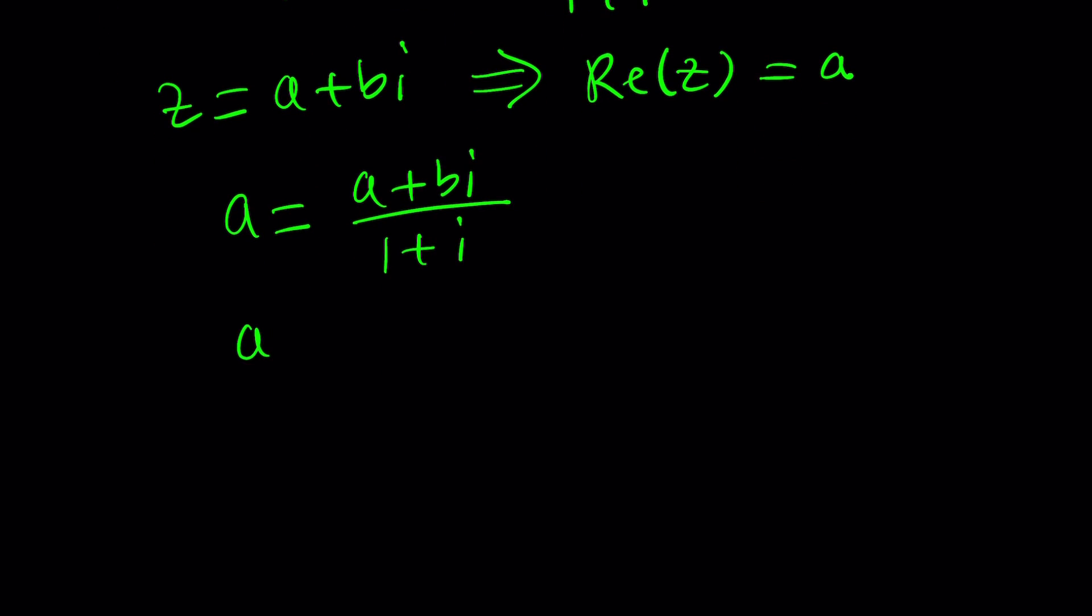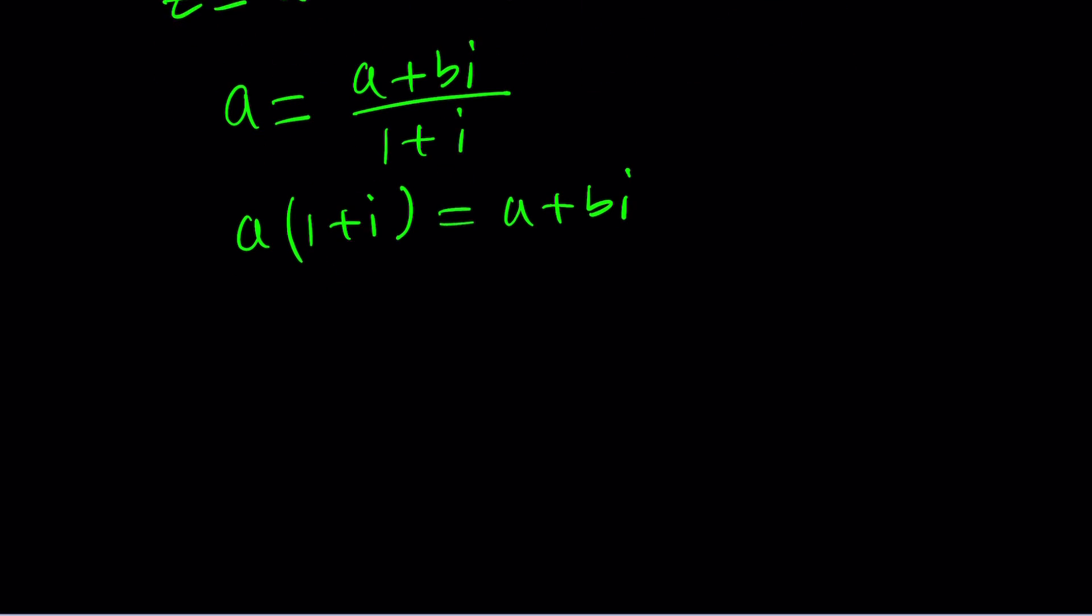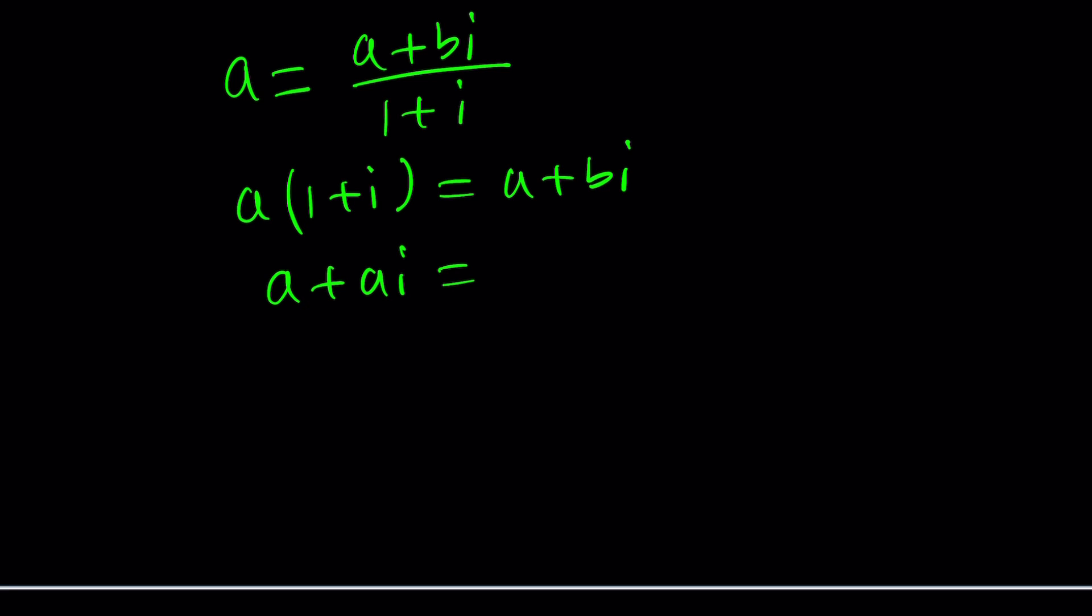So we're going to solve this equation by cross multiplication. We multiply a times 1 plus i. Let's go ahead and write it that way first. And then we're going to go ahead and distribute a plus ai equals a plus bi. That's kind of weird, isn't it? What does that mean? It means that the real parts have to be equal, but we already know a equals a. Obviously. Reflexive property. What about this? The imaginary parts also have to be equal. By the way, I forgot to say this appears in lecture notes, but if two complex numbers are equal, their real parts are equal, and their imaginary parts are equal. That's easy to prove. But from here, we get b equals a.